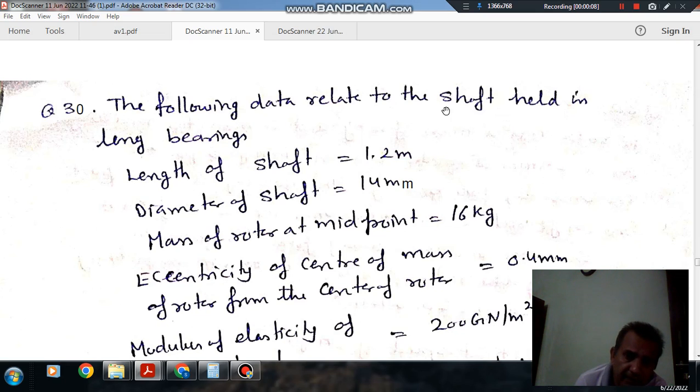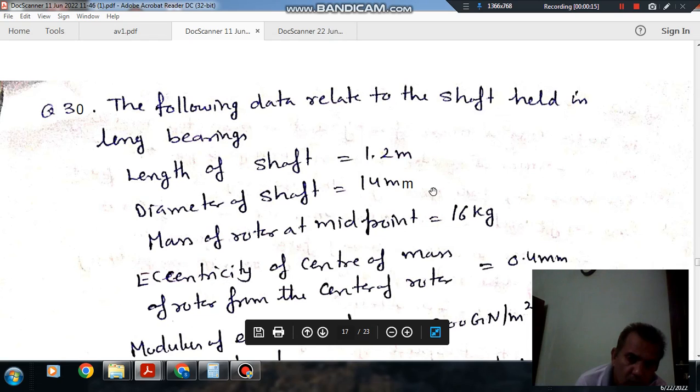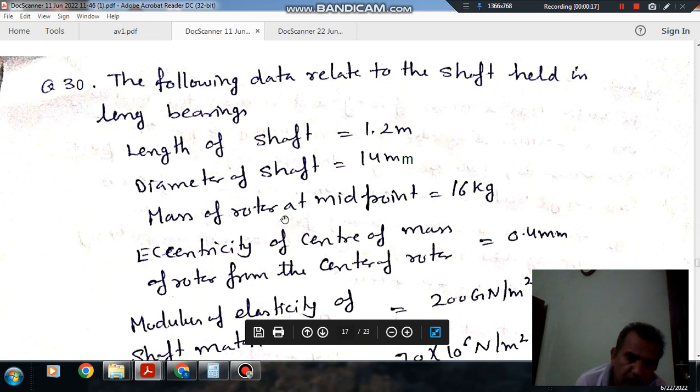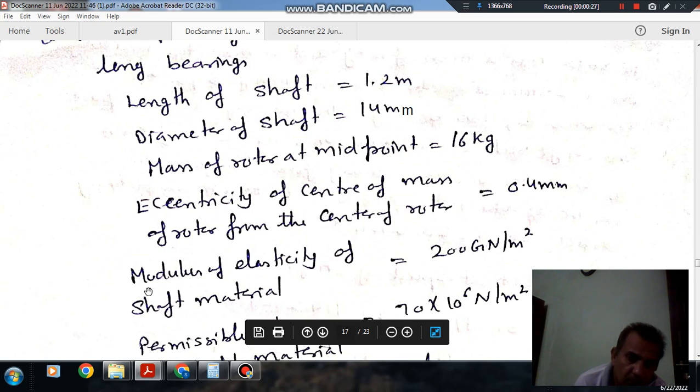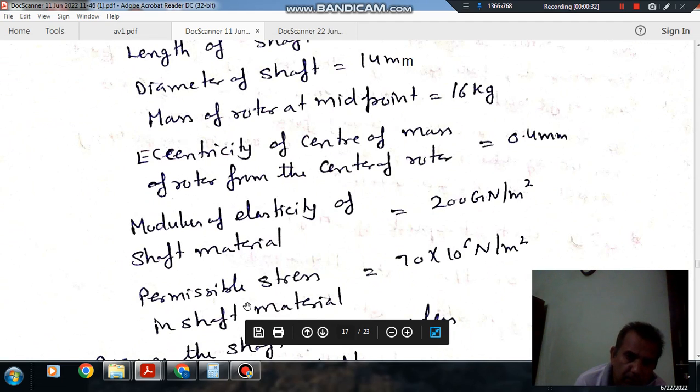The following data relates to shaft held in long bearing. Length of shaft is 1.2 m. Diameter of shaft is 14 mm. Mass of rotor at midpoint is 16 kg. Eccentricity of center of mass of rotor from the center of rotor is 0.4 mm. Modulus of elasticity of shaft material is 200 GN/m². Permissible stress in shaft material is 70 x 10^6 N/m².